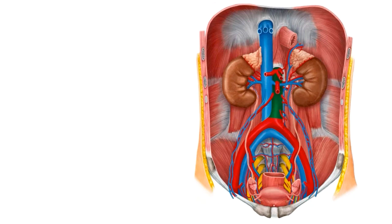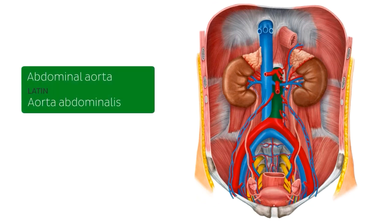This tutorial is about the arteries of the abdomen. In this slide, we're going to have a bit of a chat about the abdominal aorta. In this image, you can see the abdominal aorta, highlighted in green, emerging from the diaphragm. The abdominal aorta is actually a distal continuation of the thoracic aorta, which is above the diaphragm in this image and therefore not visible. These two parts, the abdominal aorta and the thoracic aorta, make up the descending aorta.